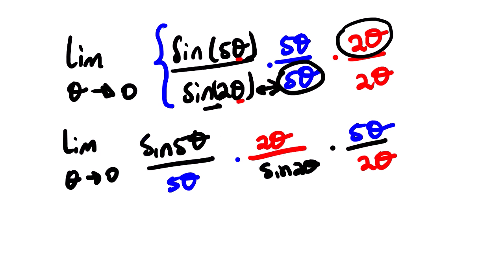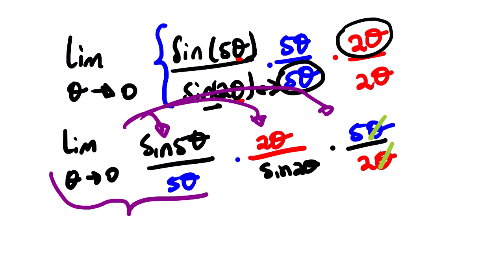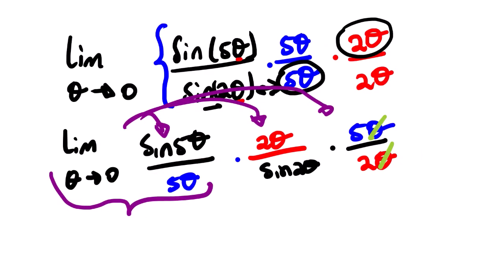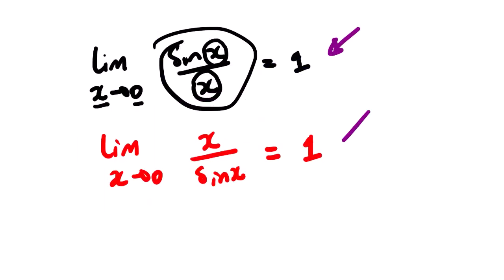This rearrangement allows us to cancel corresponding terms. The limit applies to each factor separately. We can see that the limit as theta approaches zero of sine five theta over five theta gives us the first identity — which equals one. And the limit as theta approaches zero of two theta over sine two theta gives us the second identity — also equal to one.